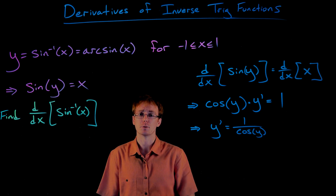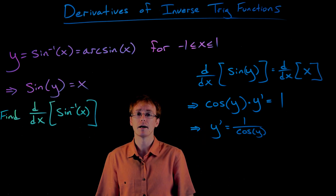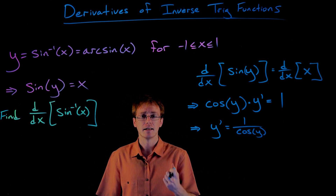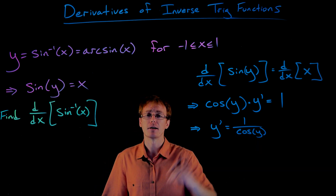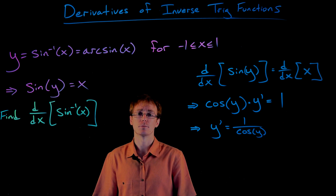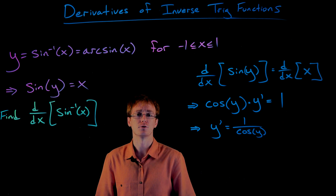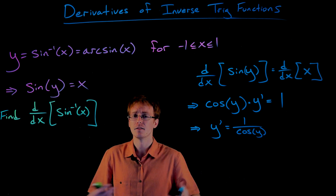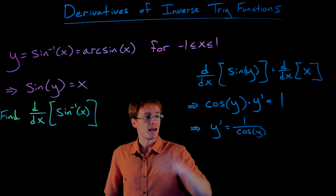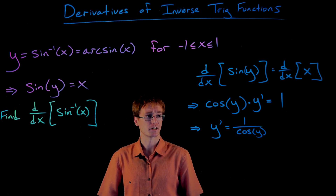Now we have our derivative of our inverse sine function: it's 1 over cosine of y. But we don't want to stop here — we want to express this derivative in terms of the input variable x. So we have to figure out how to write 1 over cosine of y in terms of x. We could use trig identities, but let's use right triangle trig instead. They're actually equivalent, and it's just a matter of preference.